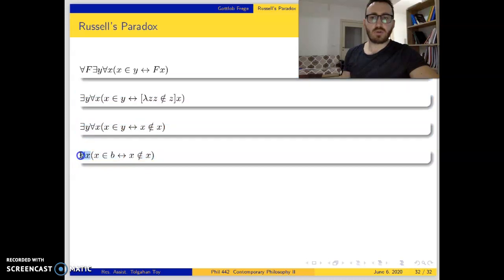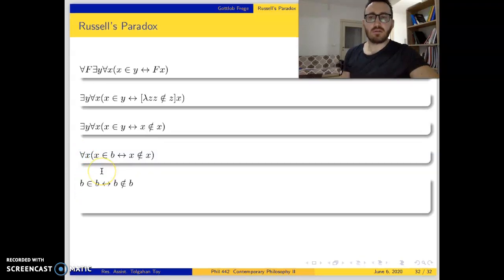Now we have a universal quantifier. Let's do universal instantiation. b is substituted for x. Then b is an element of b if and only if b is not an element of b.